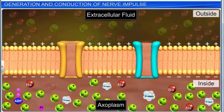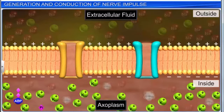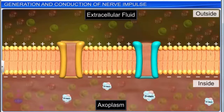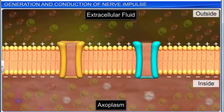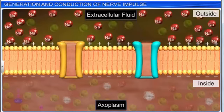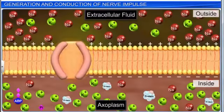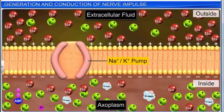Therefore, the axoplasm inside the axon contains a high concentration of potassium ions, negatively charged proteins, and a low concentration of sodium ions. On the contrary, the extracellular fluid outside the axon contains a low concentration of potassium and a high concentration of sodium. This differential permeability is maintained by a sodium-potassium pump present inside the membrane.